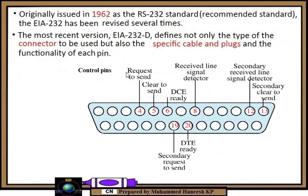EIA-232 was originally issued in 1962 as the RS-232 standard — Recommended Standard. It has been revised several times. In telecommunications, RS-232 is a standard originally introduced in the 1960s for serial communication transmission of data. It formally defines signal connections between a DTE such as a computer terminal and a DCE such as a modem.